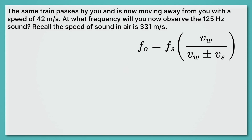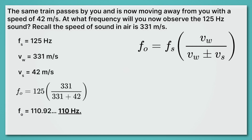Now it's your turn. The same train passes by you and is now moving away from you with a speed of 42 meters per second. At what frequency will you now observe the 125 hertz sound? Recall that the speed of sound is 331 meters per second. You should have found that the frequency observed was 110 hertz — a lower frequency than before because the train is moving away from you, and that lower frequency gives you a low pitch.